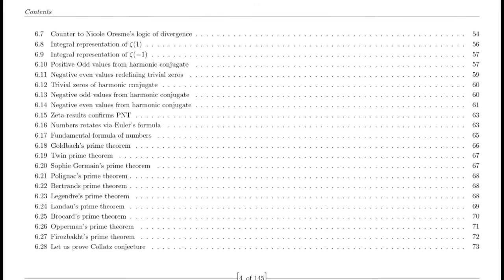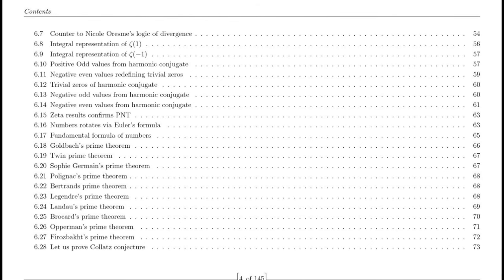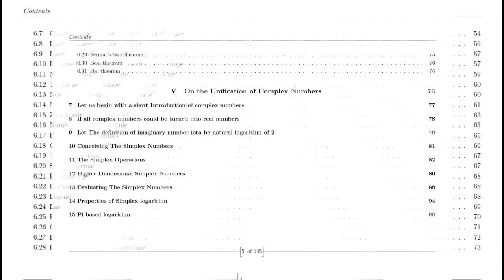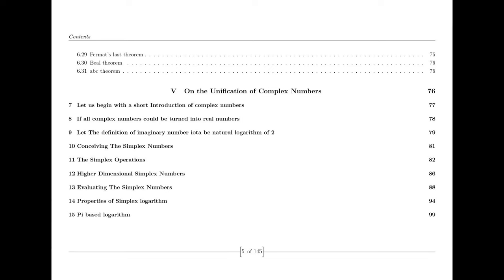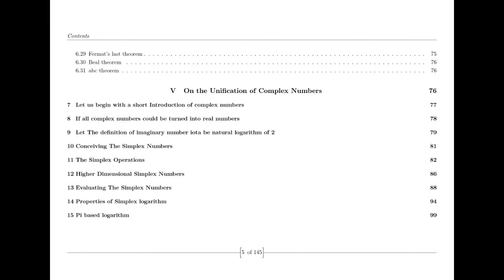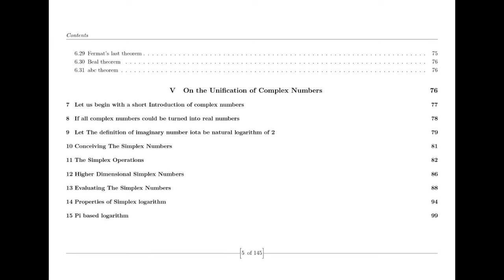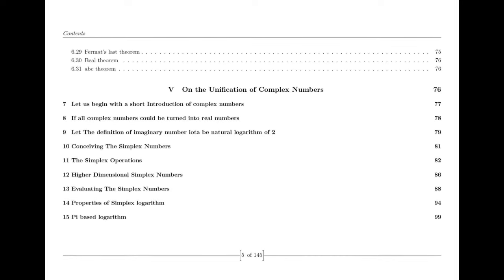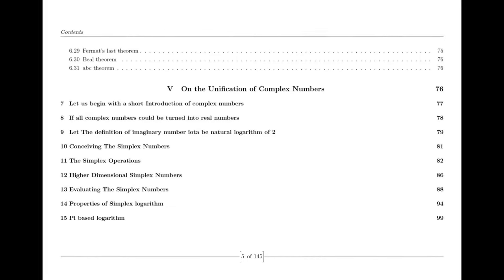To broaden the domain of the Riemann zeta function, we generally employ a technique known as analytic continuation. Analytic continuation enables us to extend the definition of a function to a larger domain. In the case of the zeta function, we can extend it to the entire complex plane, excluding the point s equals 1, where it possesses a simple pole.